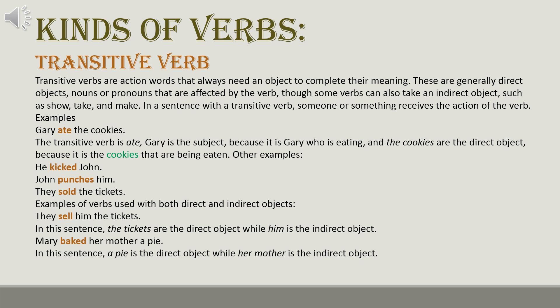For example: 'Gary ate the cookies.' The transitive verb is 'ate' because Gary is the subject — Gary is eating — and 'the cookies' is the direct object because the cookies are being eaten. Other examples: 'He kicked John' — he is the subject, John is the object. 'John punches him' — John is the subject, him is the object.